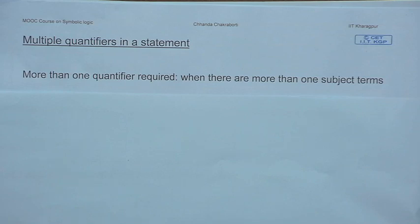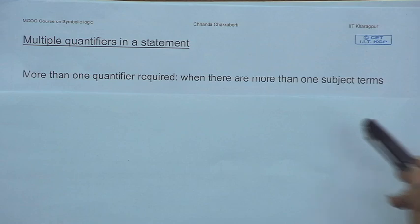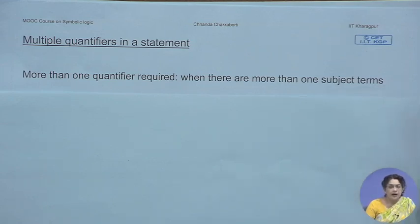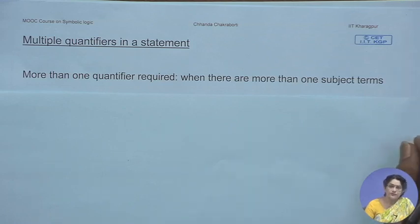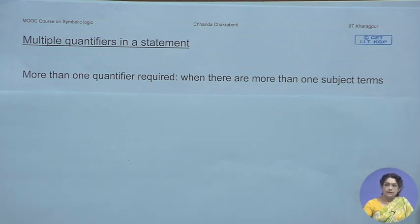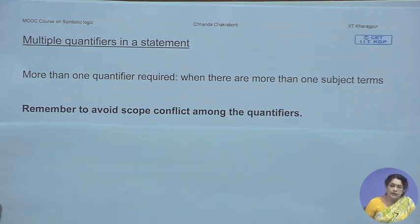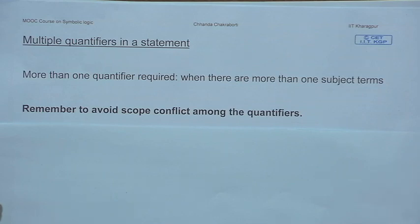I will explain and exemplify this with actual propositions. The first lesson of today is: if you are asking yourself when do I need to use more than one quantifier, the answer is that it depends on the proposition. If the references are to more than one subject term, then the proposition calls for the use of more than one quantifier. And when you are using multiple quantifiers, the first thing to remember is that you need to avoid scope conflict.